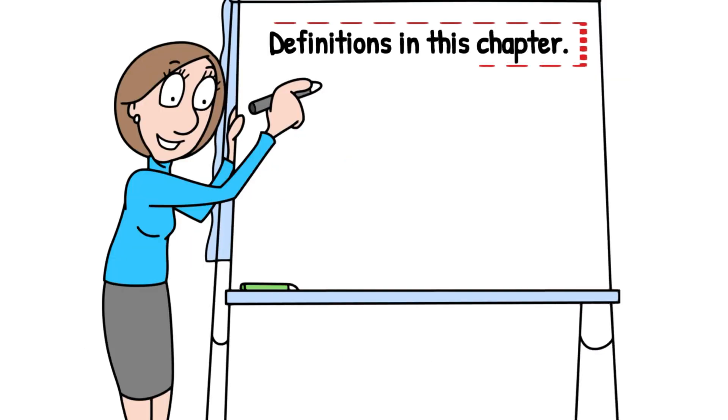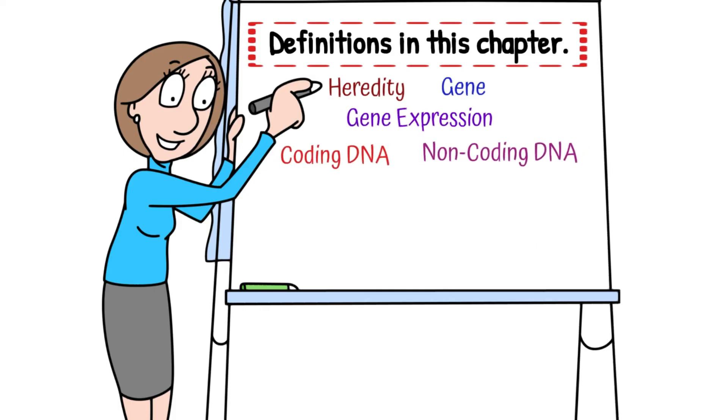What are the definitions in this chapter or this section of genetics? You should be able to define heredity, gene, gene expression, coding DNA, non-coding DNA, triplet, codon, DNA profile, genetic screening, transcription and translation.